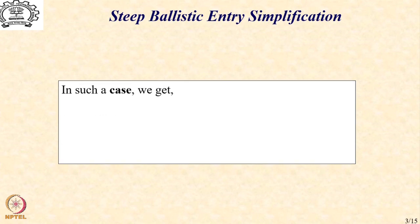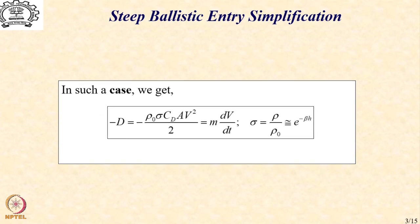In such a case, we get the following system of equations. We just equate the drag which is defined as rho 0 sigma CDA into v square by 2 which is equal to m dv by dt directly. A simple differential equation which is non-linear as we have v square on the right hand side.